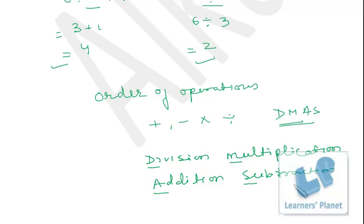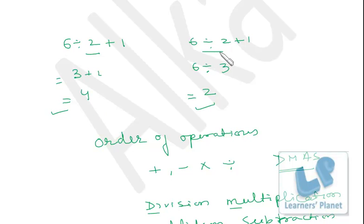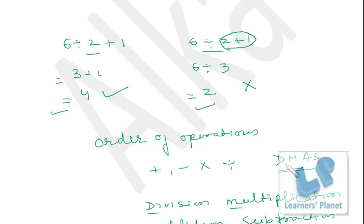You have to strictly follow this order, otherwise you will get wrong answers. In this case, 6 divided by 2 plus 1: one approach gives 4, the other gives 2. The difference is the order of operation. In the correct approach, you first divide — 6 divided by 2 equals 3 — then add 1, giving 4. In the wrong approach, addition is done first: 2 plus 1 is 3, then 6 divided by 3 gives 2. That is wrong.